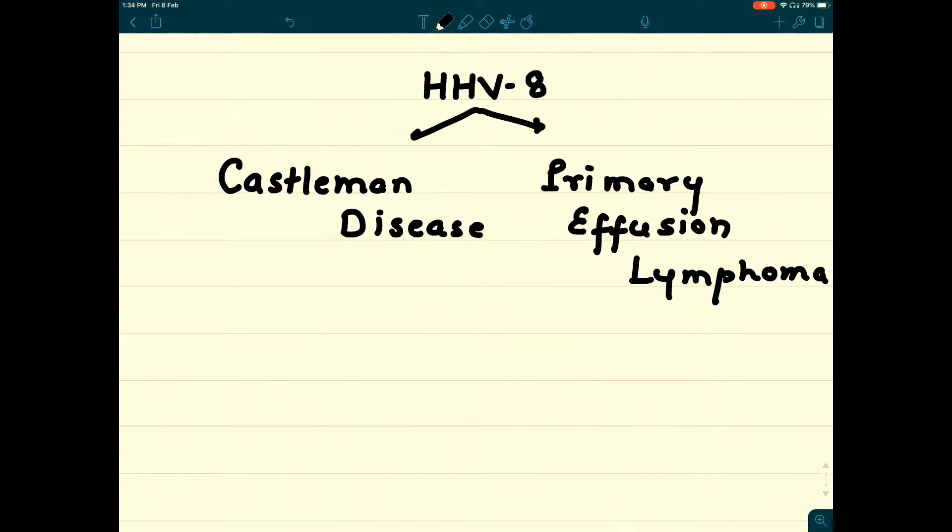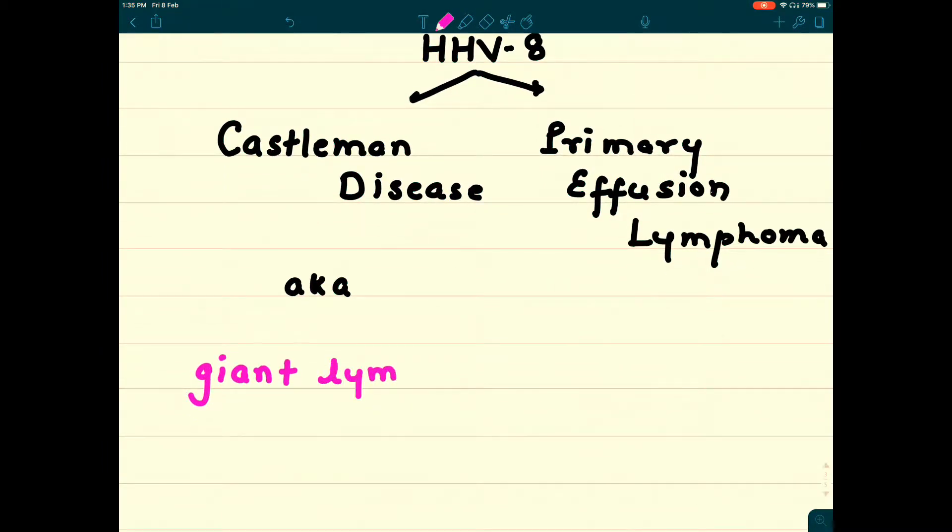Castleman disease is also known by its pathological name, giant lymph node hyperplasia. Lymph nodes get enlarged, they become giant, and inside pathologically what we see is the hyperplasia of lymphoid tissue.